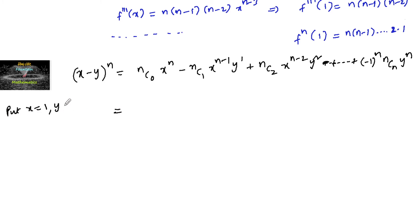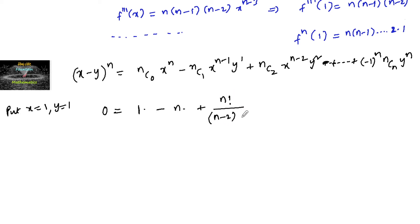Putting x = y = 1, we get (1-1)ⁿ = 0 = C(n,0)·1 - C(n,1)·1 + C(n,2)·1 - ... + (-1)ⁿ·C(n,n)·1. So 0 = 1 - n + n!/[(n-2)!·2!] - ... + (-1)ⁿ·1.